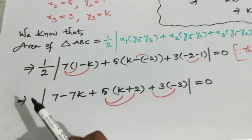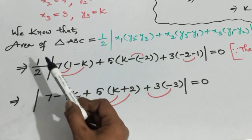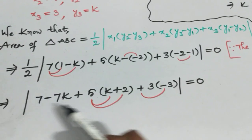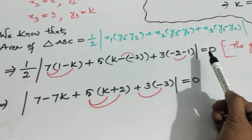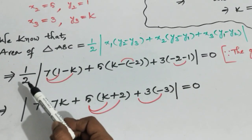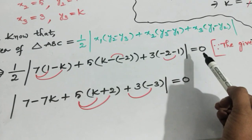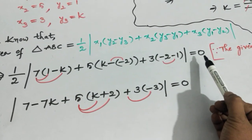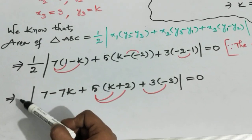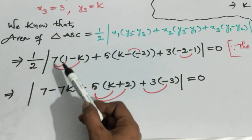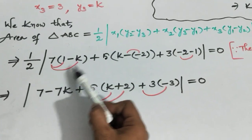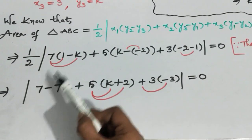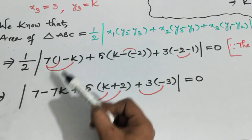The half on the left side — since the right side is zero, multiplying both sides by 2 gives zero. Now removing the modulus, we expand: 7 times (1 - k) gives 7 minus 7k.